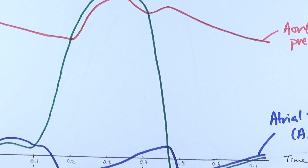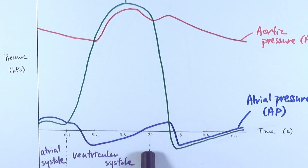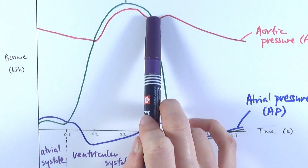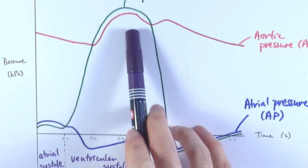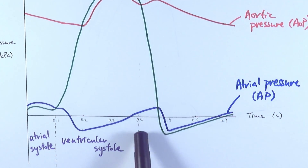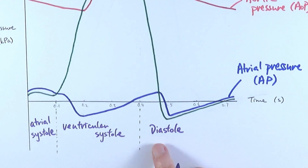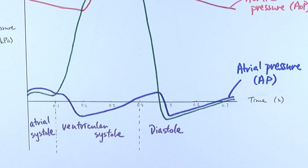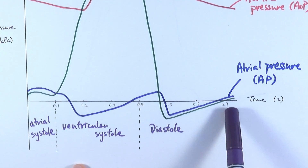Eventually the pressure will drop again as all of the blood has traveled through. Looking at the graph, there is an intersection point where the ventricular pressure drops lower than the aortic pressure. Shortly after that, the atrial pressure also drops. At this point we say the whole heart undergoes diastole — the entire heart is relaxing, allowing time for blood to fill into both the atria and ventricles again.